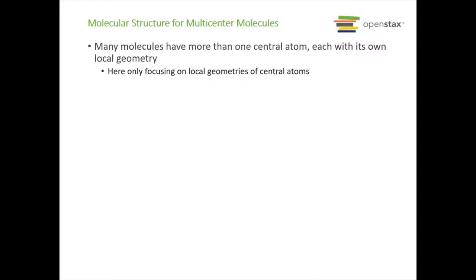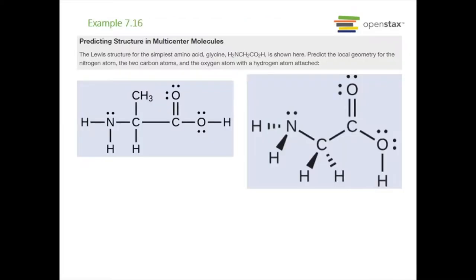Some molecules have more than one central atom — such as a chain of atoms bonded together — so we examine local geometries around each central atom. For those going on to organic chemistry, you will see this frequently. Glycine, the simplest amino acid, has four central atoms: nitrogen, two carbons, and oxygen. Each atom has its own local geometry.